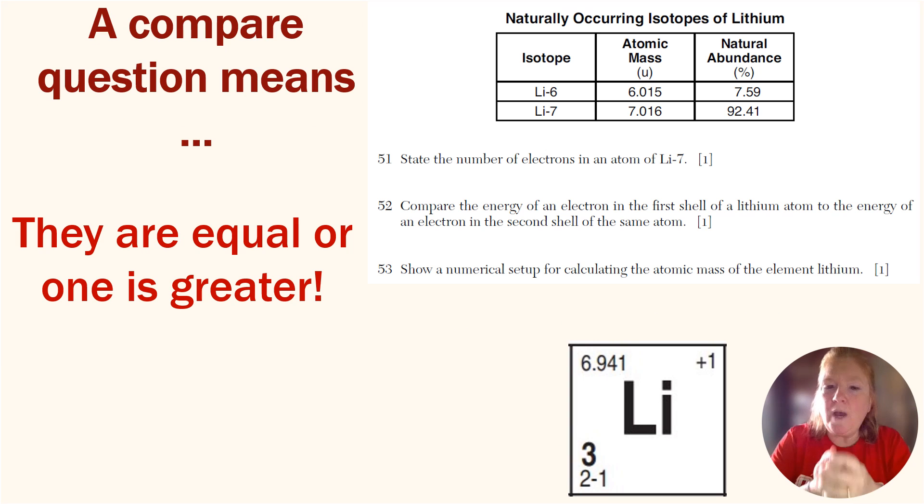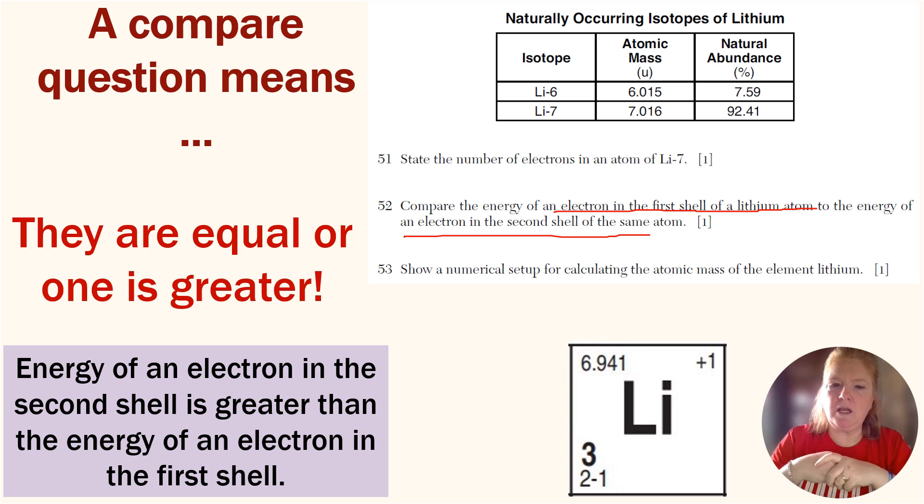When it says compare the energy of an electron, compare - what does that mean? There are three types of answers: either they're the same, one is greater, or one is less. So an electron in the first shell of a lithium atom to an electron in the second shell - then you just decide which one is greater, which one has more energy. So you should know that an energy of an electron in the second shell is greater than the energy of an electron in the first shell. Or you could have said an electron in the first shell has less energy.